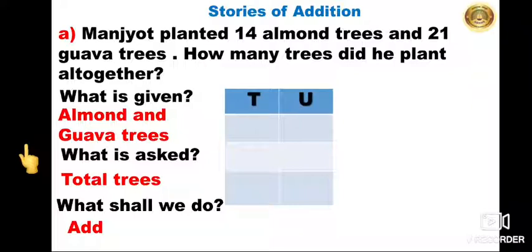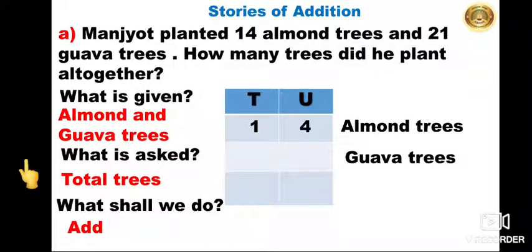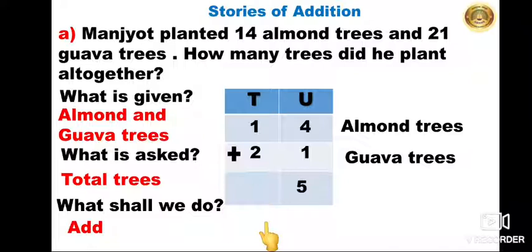Now we will write tens and units — units on the right-hand side and tens on the left-hand side. We will write the first number, the number of almond trees. How many almond trees are there? 14. We write 4 in the units place and 1 in the tens place. Then we will write the number of guava trees. How many guava trees? 21. We write 1 in the units place and 2 in the tens place. As we have to find the trees all together, we put an addition sign. We start adding from the units side: 4 plus 1 is equal to 5. Then we add the tens place: 1 plus 2 is equal to 3. So the total number of guava and almond trees is 35.